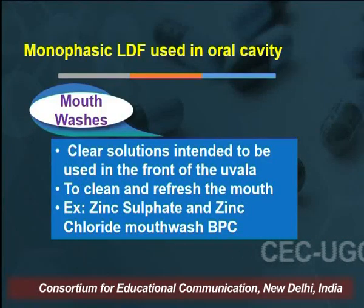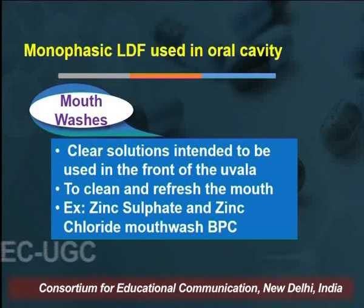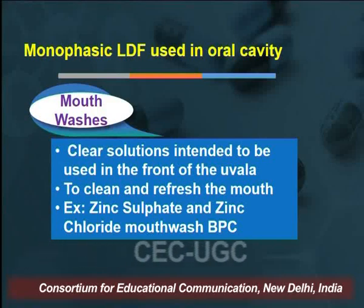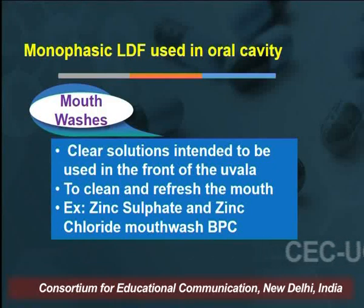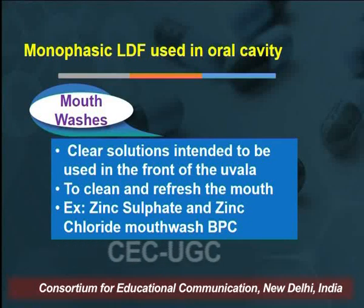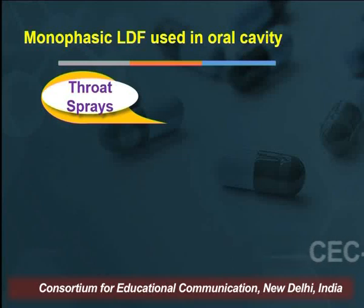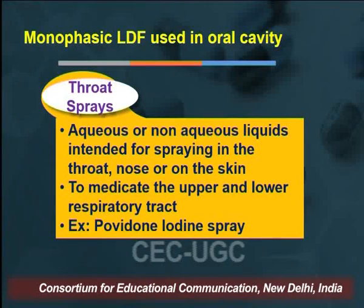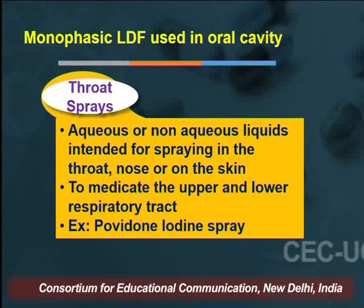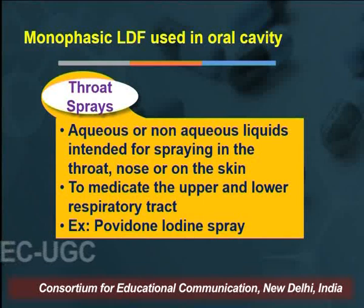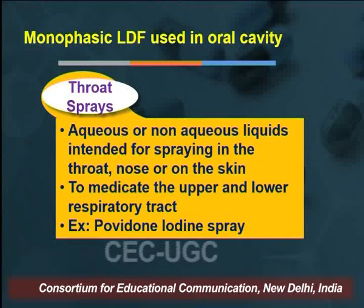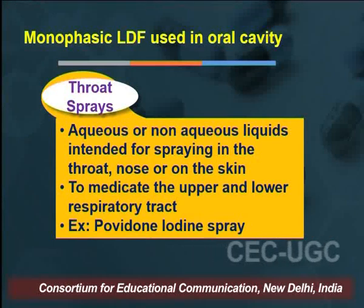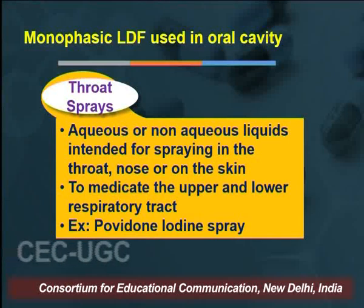The next type under monophasic liquids for the oral cavity are mouthwashes. Mouthwashes are clear solutions intended to be used in the front of the oral cavity to clean and refresh the mouth. Example: zinc sulphate and zinc chloride mouthwash, official in the British Pharmaceutical Codex. Next, oral cavity monophasic liquids include throat sprays — aqueous or non-aqueous liquids intended for spraying into the throat, nose, or onto the skin, generally medicated to relieve diseases affecting the upper and lower respiratory tract. Example: povidone-iodine spray.